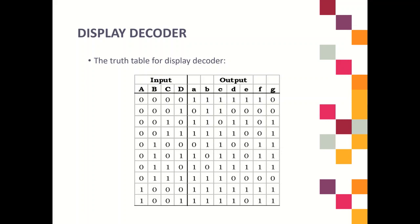This is the truth table for the Display Decoder, which is for the 7-segment display. Based on this truth table, you have 4 inputs and 7 outputs. We need 4 inputs because the 7-segment will display numbers from 0 to 9, and to represent 9 we need 4 bits in binary.